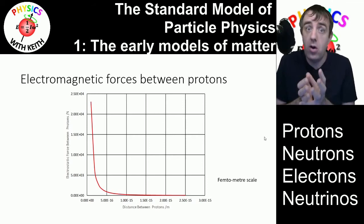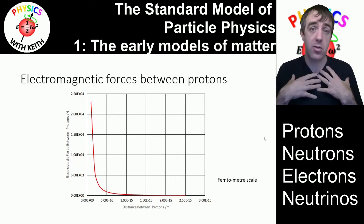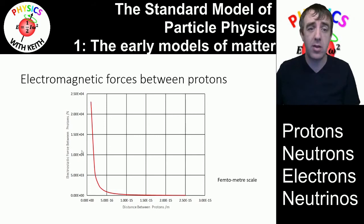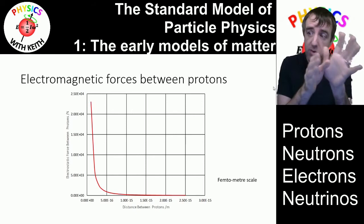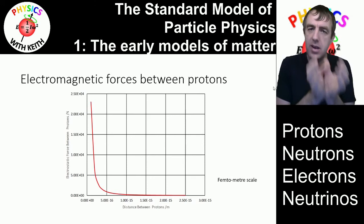To put that into perspective, I weigh about 1,000 newtons. So for the force between two protons to be on the order of 10,000 newtons, that is a significant repulsive force. This was known about, which meant there was a big puzzle about why the nucleus held together. We're going to try and unpick that puzzle in the next video.